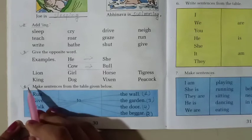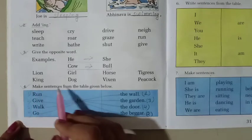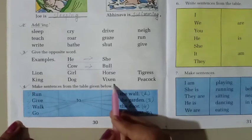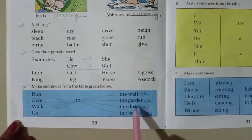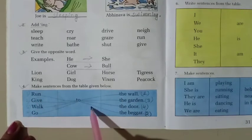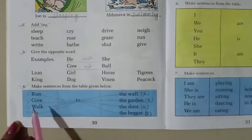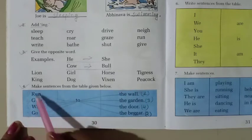Students, come to the next question. Question number four. Make sentences from the table given below. So we have to match these words and we have to make sentences from this table. Students, look. I have done numbering.